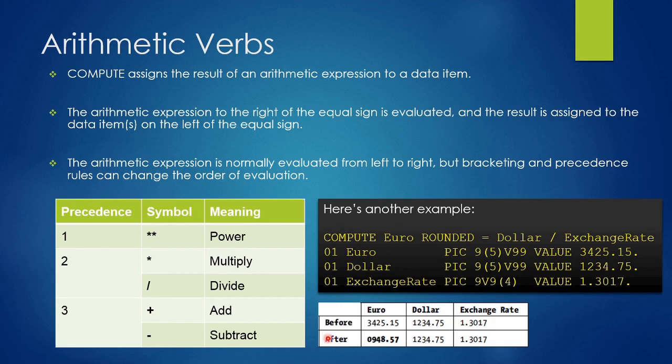After the COMPUTE statement, the euro will hold 948.57. The actual result is having a lot of digits after the decimal. Since we have defined euro with PIC 9(5)V99, that is two places after decimal, the value got rounded off and we got 57 after the decimal. The value of dollar and exchange rate will not change and remain as it is.